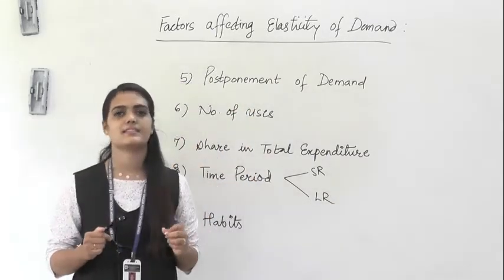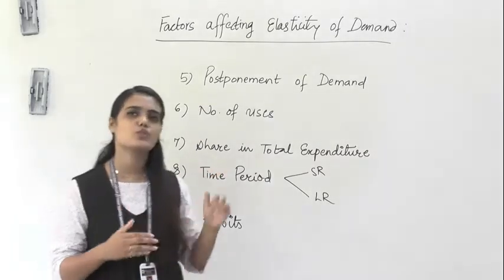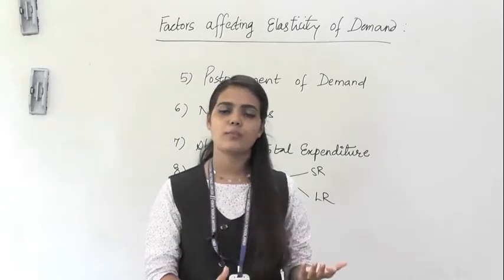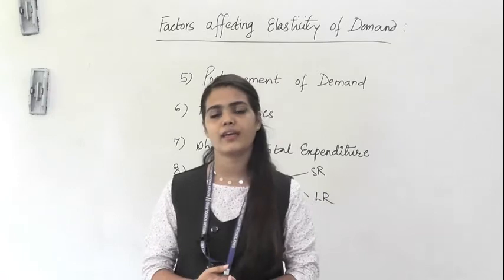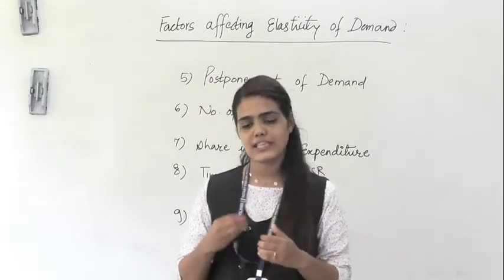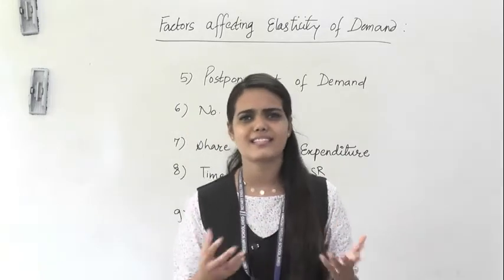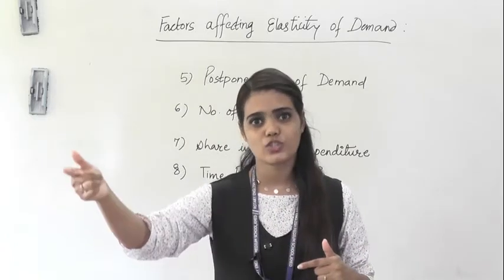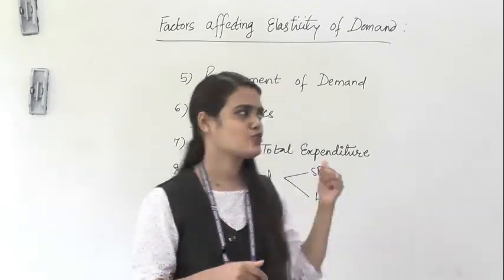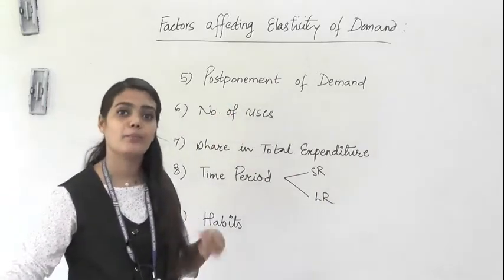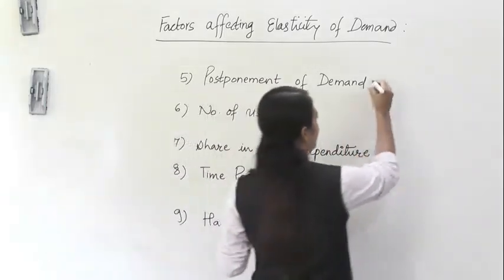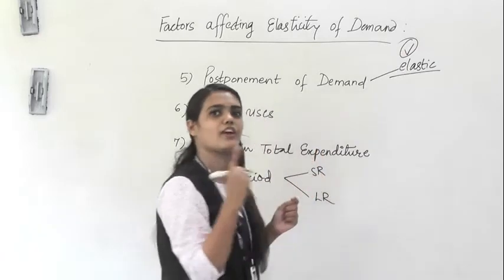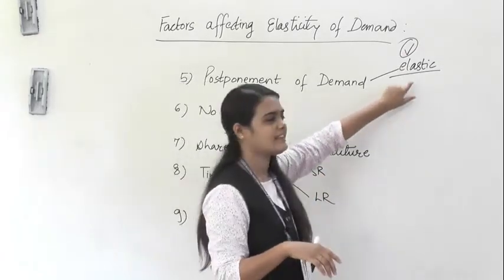The next factor affecting the price elasticity or the elasticity of demand is the postponement of demand. What do you mean by postponement of demand? It means those commodities or products whose demand you can postpone. If today you want to purchase product A but it is not a necessity, you can purchase it later. So those products can be purchased later — their demand can be changed. When there is a chance of postponement of demand, it becomes elastic.